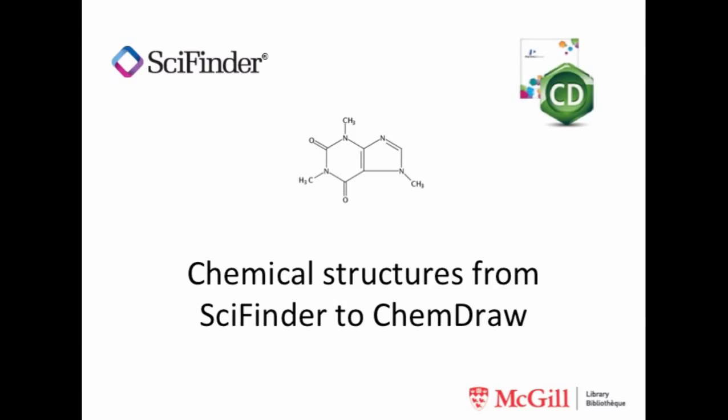You can find the structure of a substance in SciFinder, but how do you get that structure out of SciFinder and into ChemDraw?